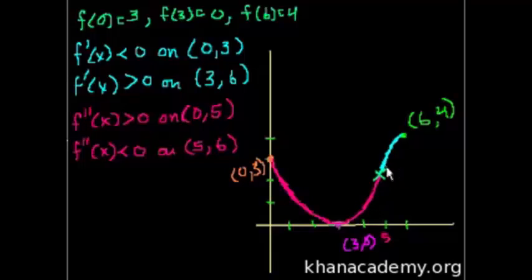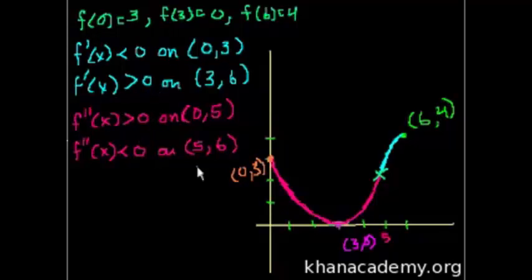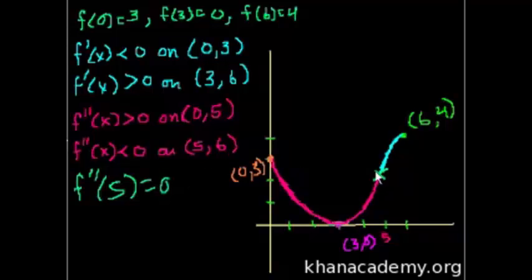I think that's all we can do with this graph. We made a couple of assumptions that the graph is continuous and differentiable over the whole thing. But I think this gives you an intuition on what the first and second derivative information does for us. Just so you know, if this was an inflection point, they could have told us that f double prime of 5 is equal to 0. We don't know that for sure, but I'm just assuming.